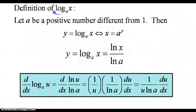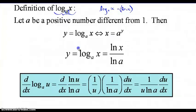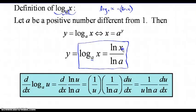Now let's talk about the general logarithmic function. The logarithm we've been working with so far was log base e. Now we're bringing in log base a — any base other than e. The process for finding the derivative is to always use the change of base formula first. If the base is anything other than e, we use the change of base formula to rewrite it in terms of natural log, since we already know the derivative and anti-derivative for the natural log.